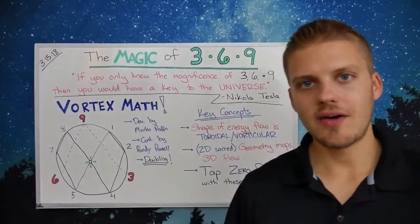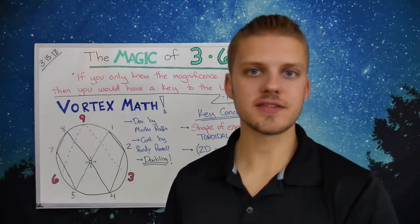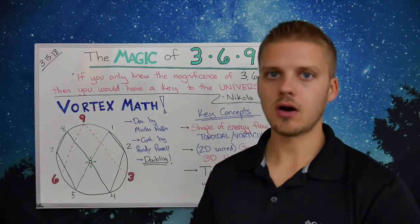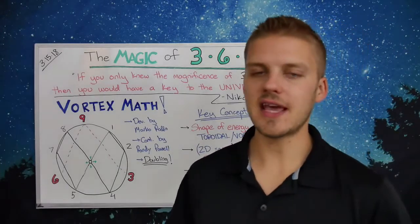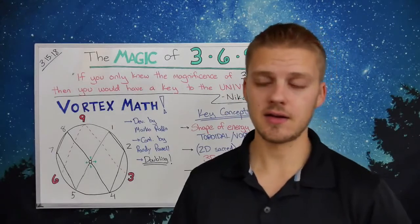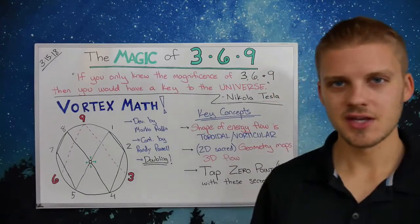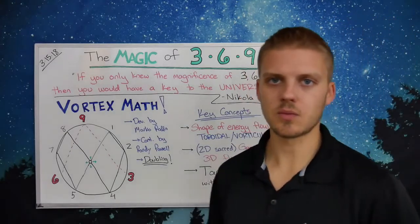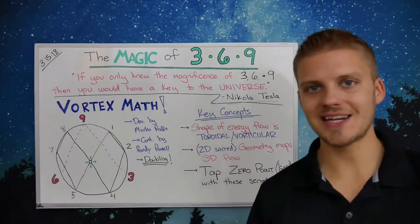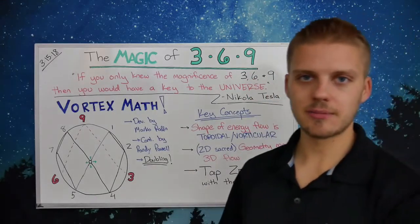I've had some requests from people asking me to get more into the esoteric philosophical sciences — the real science that actually describes what's going on. The inspiration for this video came about a week and a half ago on March 6. If you look at that date — 3, 6, 2018 — 1+8 is 9, so the date was 3, 6, 9. I posted a meme with a quote from Nikola Tesla: 'If you only knew the magnificence of 3, 6, and 9, then you would have a key to the universe.'